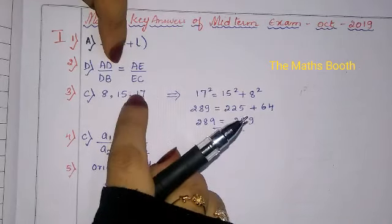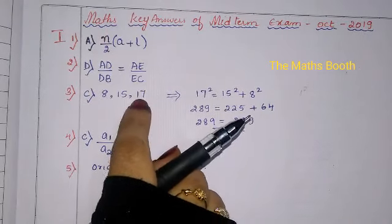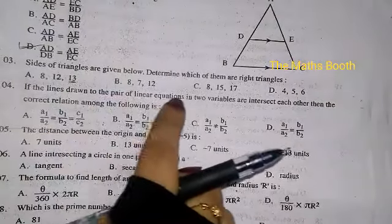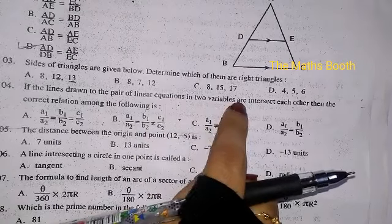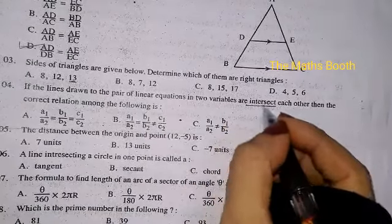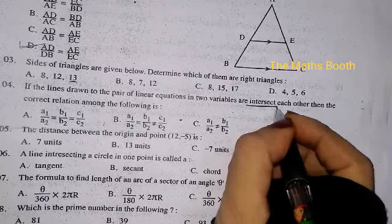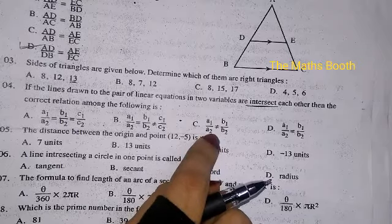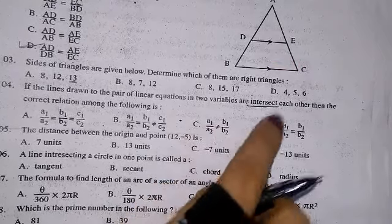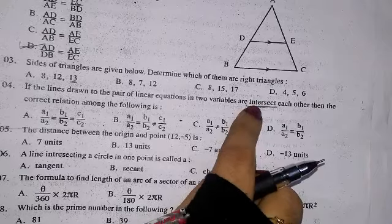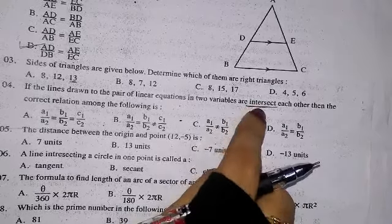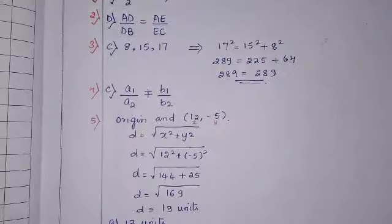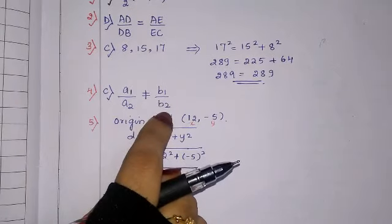Next question: if lines drawn to a pair of linear equations in two variables intersect each other — when they intersect, we know that A1/A2 is not equal to B1/B2. If parallel, they are different; if coincident, different. Here they said intersect, so the correct answer is A1/A2 ≠ B1/B2.